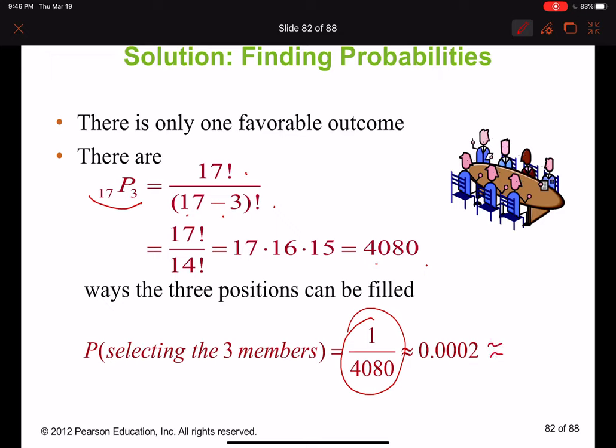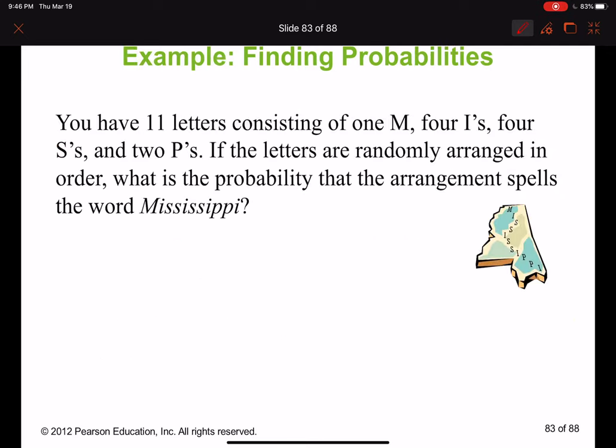It will be one out of 4080, which will be 0.0002, and which is if I move by two positions, will be 0.02 percent.